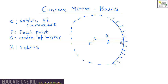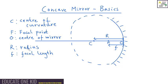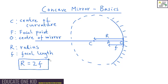This distance from F to O we call little f, and the name we give to this is the focal length. There is a simple relationship between the radius R and the focal length f: the radius is simply twice as big as f. So R is equal to two times the focal length. We will prove this relationship in another video.